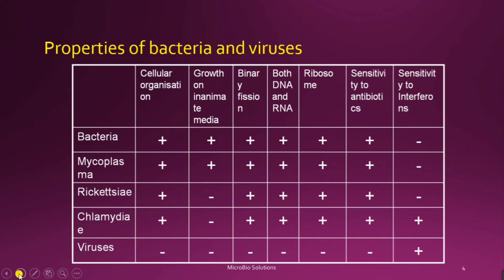Bacteria contain both RNA and DNA, whereas viruses contain either DNA or RNA. Bacteria have ribosomes and are sensitive to antibiotics, while viruses are not. The key difference vice versa is sensitivity to interferons: bacteria are not sensitive to interferons, whereas viruses are sensitive to interferons. These are the differentiating features between bacteria and viruses.